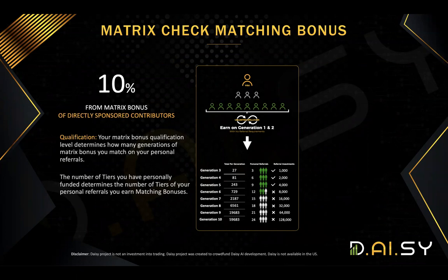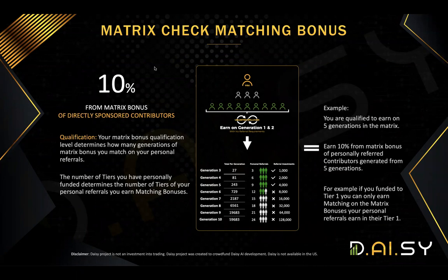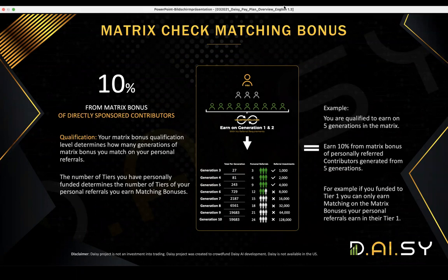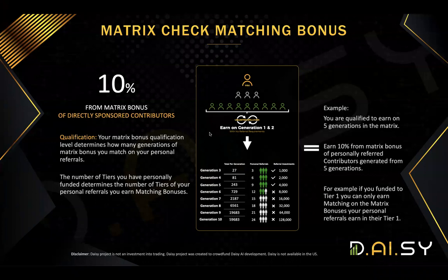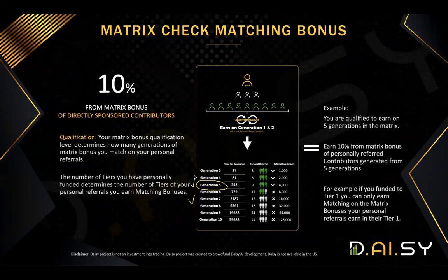The matrix check matching bonus: if you refer someone who is building his or her matrix, you will get 10% of all his or her matrix income. However, you have to be qualified for those generations. So if you are qualified for generation five, you will earn 10% of all the matrix income your direct referral makes with five generations — even if he or she is earning from seven generations. You will still only get 10% of earnings from those five generations you are qualified for.